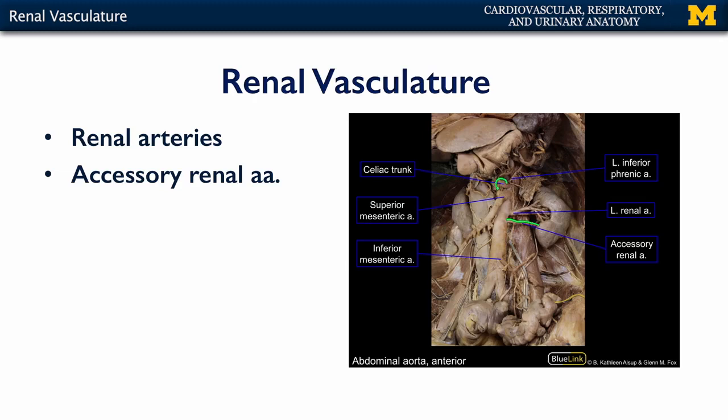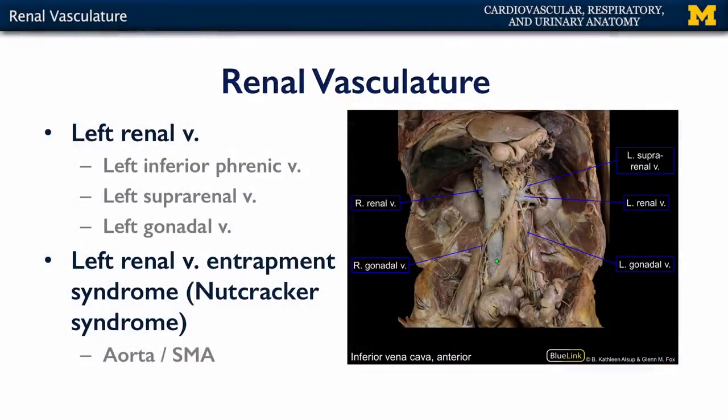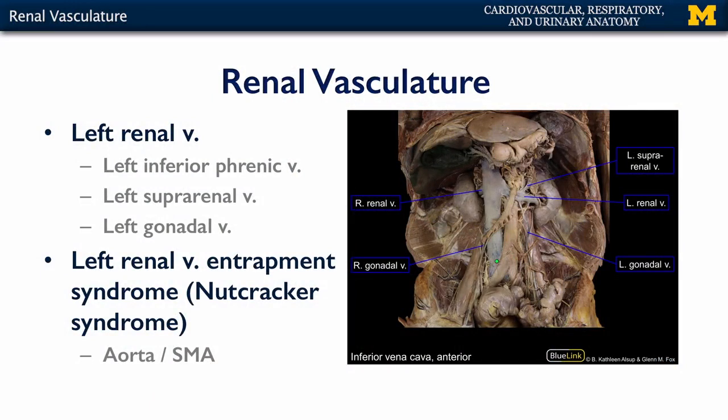Superior to the SMA we can see the celiac, and inferior we can see the inferior mesenteric arteries as well. That left renal vein, as you recall, has a number of tributaries: the left inferior phrenic vein, the left suprarenal vein, and the left gonadal vein. That's a lot of blood all being conducted ultimately through this one vessel.